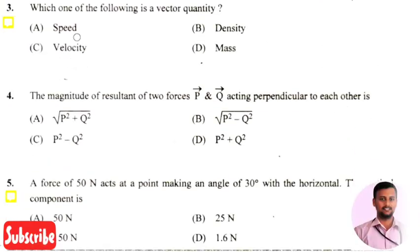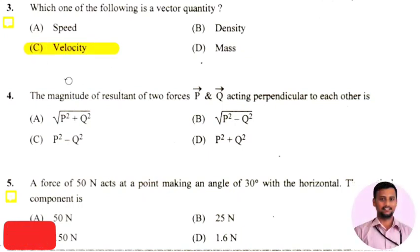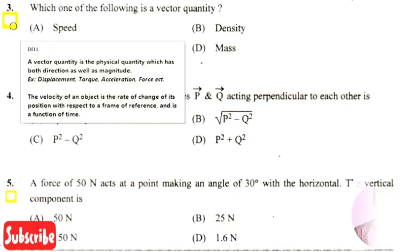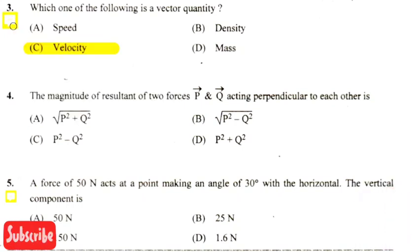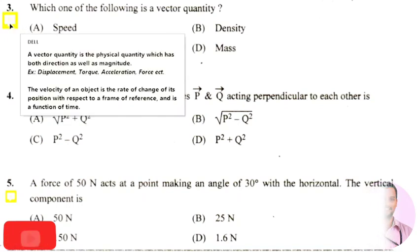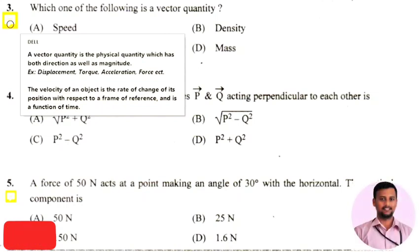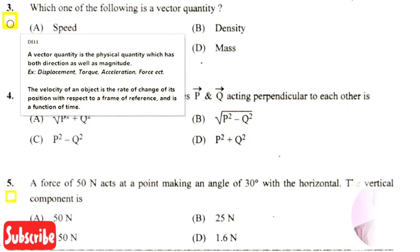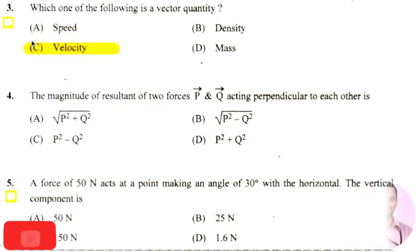The next question asks which one of the following is a vector quantity. The right answer is option 3, that is velocity. A vector quantity is a physical quantity which has both direction as well as magnitude. Velocity is the ratio of change of position with respect to a frame of reference and is a function of time, so it has both magnitude and direction.